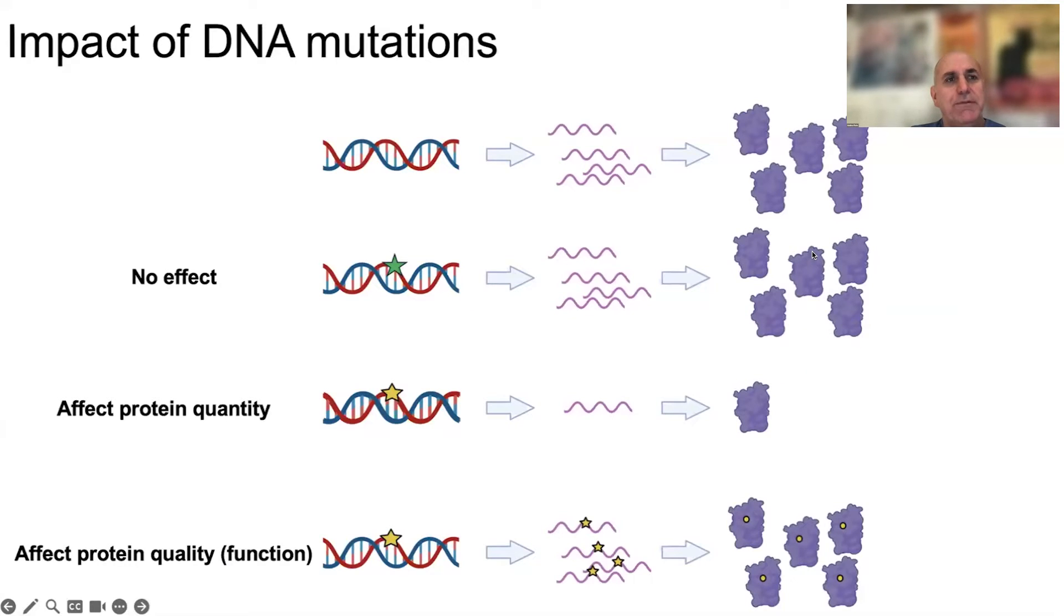I'll give you one example of this, which is the impact of DNA mutations. You might imagine that they all have effects, but the reality is the vast majority have no effect at all. You can see here in these cartoons, the DNA is transcribed, this is the messenger RNA here, and this is the proteins.